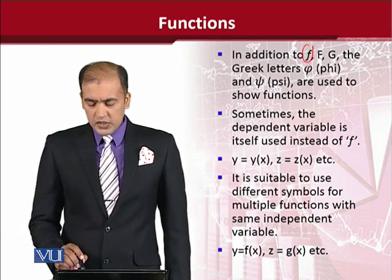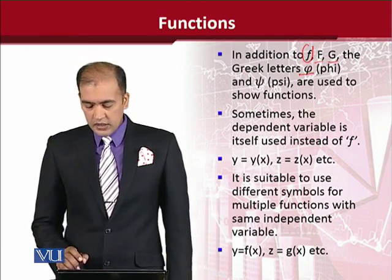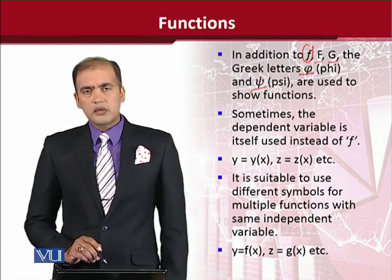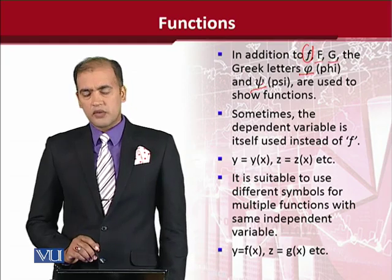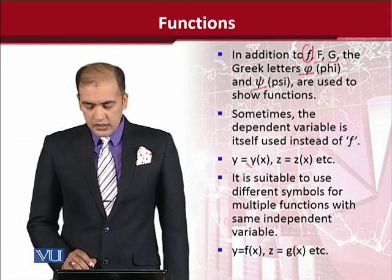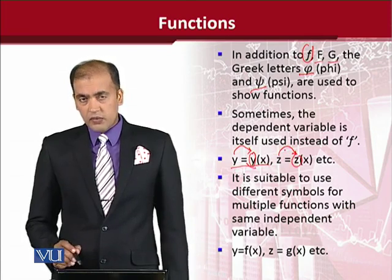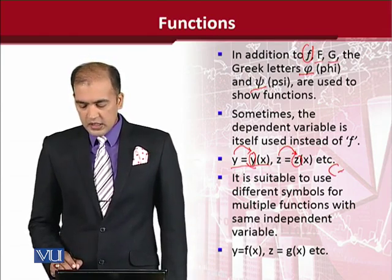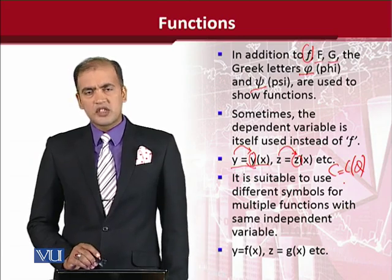Instead of this f, we can use capital F, capital G, small g. We can use Greek letters. You can also see phi and psi. We can use capital forms of them. So it is a convention to use these alphabets as a symbol or notation of a function. But if you see, in function, instead of f, the dependent variable itself is written. As you can see, y is y of x or z is a function of x. We can also write it in this way. In economics you often see c is a function of q; we can write f of q as well.